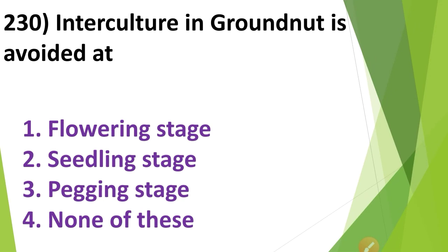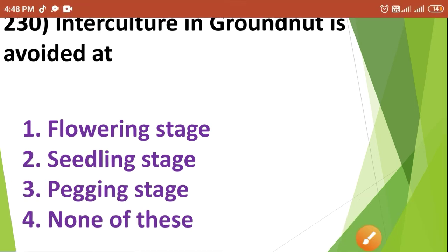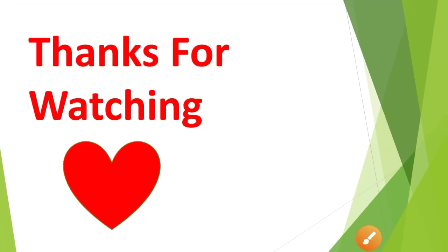Interculture in groundnut is avoided at: 1. Flowering stage, 2. Seedling stage, 3. Pegging stage, 4. None of these. Interculture in groundnut is avoided at Option No. 3 — the pegging stage. Thank you friends for watching our video. Hope you find it useful. Please subscribe to our channel for more such videos.